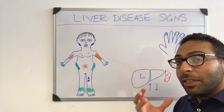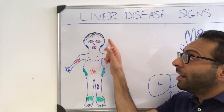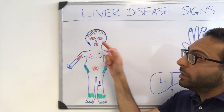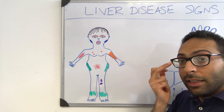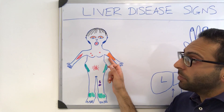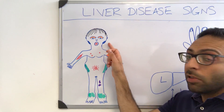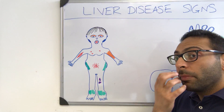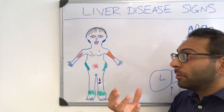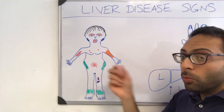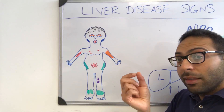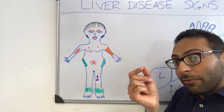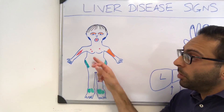Looking at the rest of the body: you can get thinning of the hair, jaundice or icterus in the sclera and on the skin, enlarged parotid glands, and the classic hepatic fetor smell coming from the breath. Muscle wasting or muscle thinning can occur, along with spider nevi — small fan-like vessels that can appear on the body.